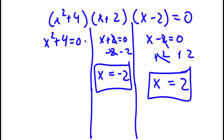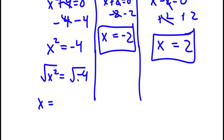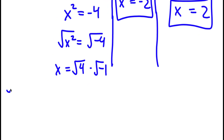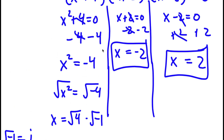Finally, for x to the power of 2 plus 4 equals 0, I'm going to subtract 4 on both sides, so I have x squared is equal to negative 4. Taking the square root on both sides, the square root of x squared is x, and the square root of negative 4 I can rewrite as the square root of 4 times the square root of negative 1. The square root of negative 1 is the imaginary number i, so x is equal to positive or negative 2i.